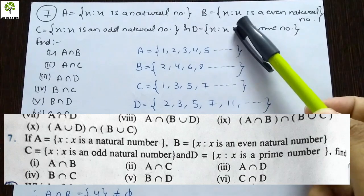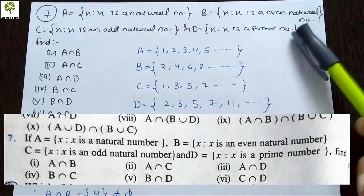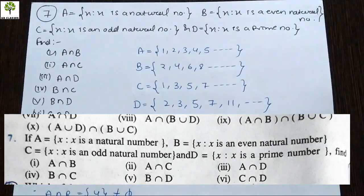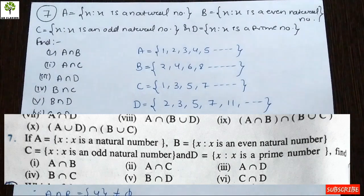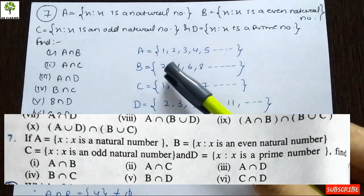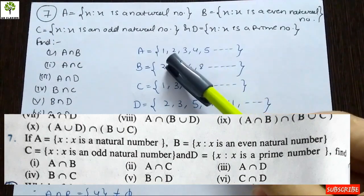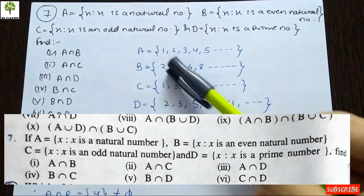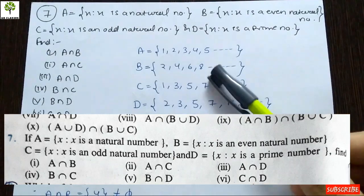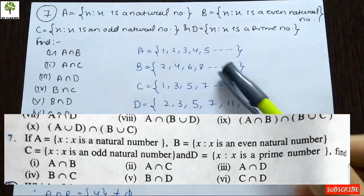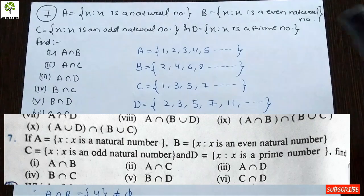Now talking about set B, B is defined as x is an even natural number. Even numbers are all numbers divisible by 2. Even natural numbers will be 2, 4, 6, 8 and so on. Natural numbers start from one, but even natural numbers start from 2: 2, 4, 6, 8 and so on.